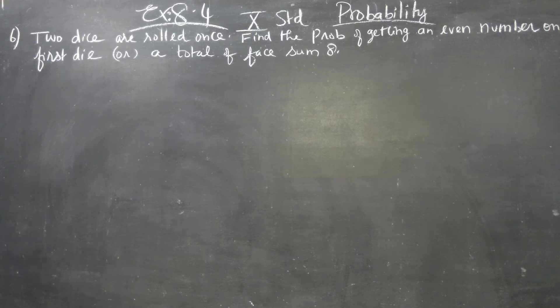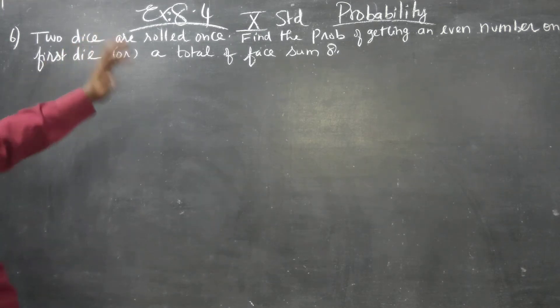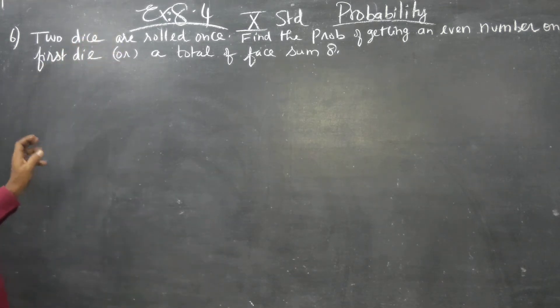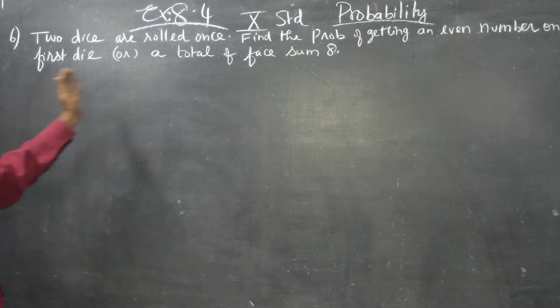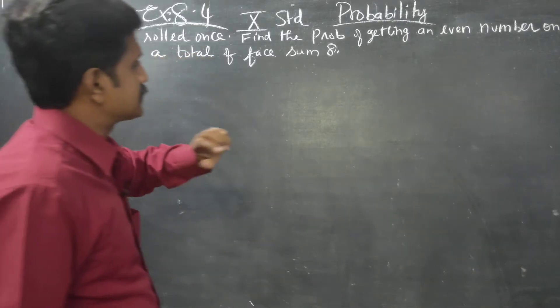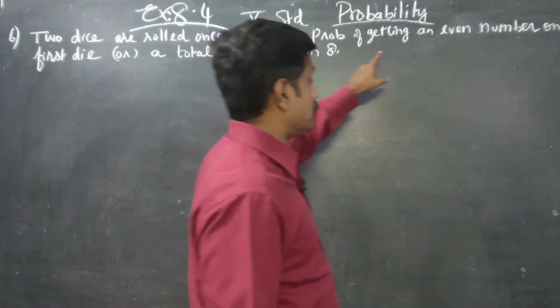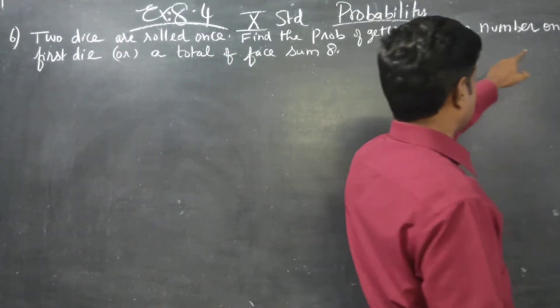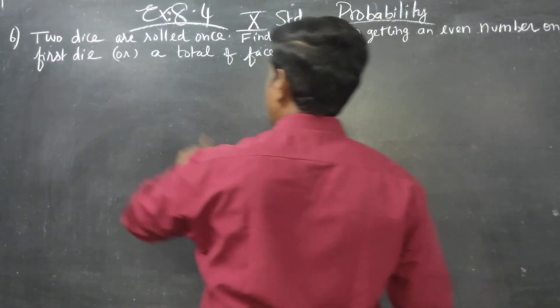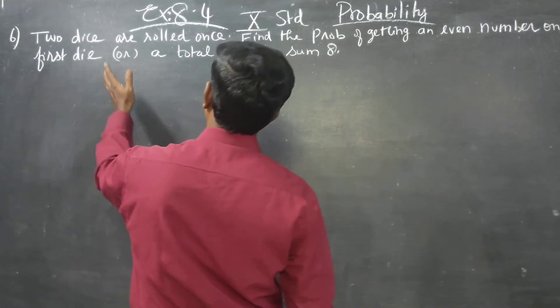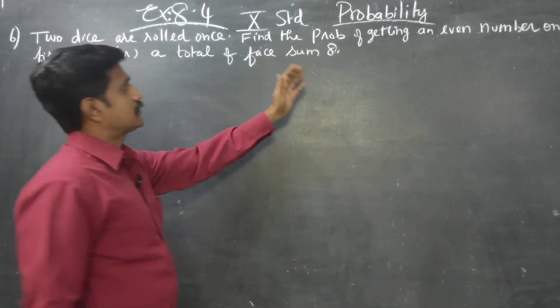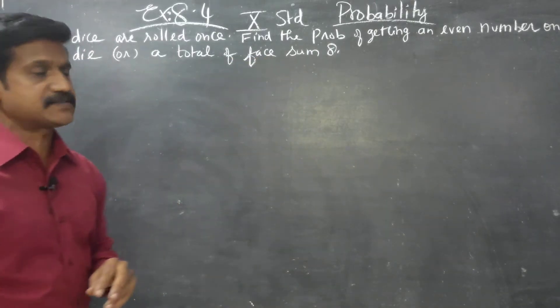Dear 10th standard students, in exercise number 8.4, two dice are rolled once. Find the probability of getting an even number on the first die or a total sum of 8.